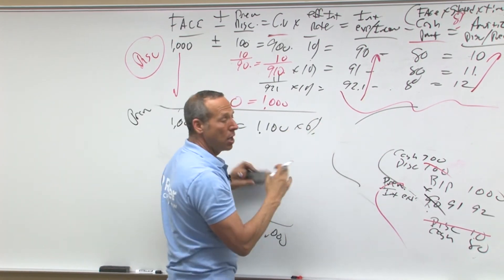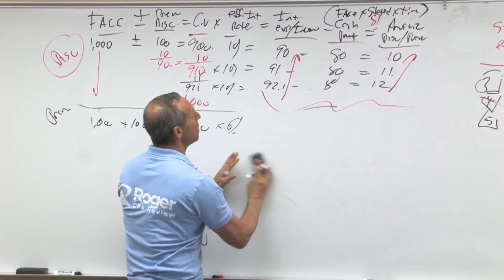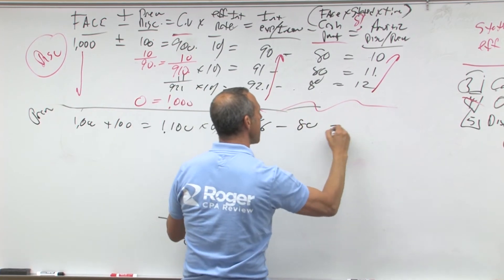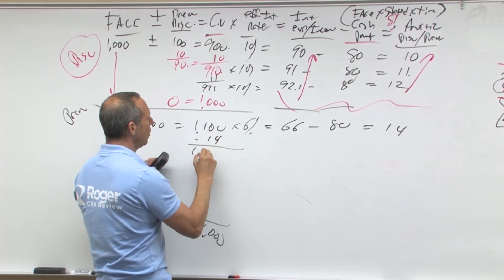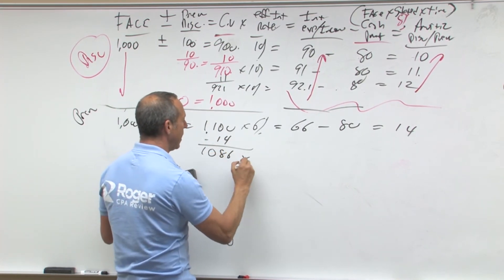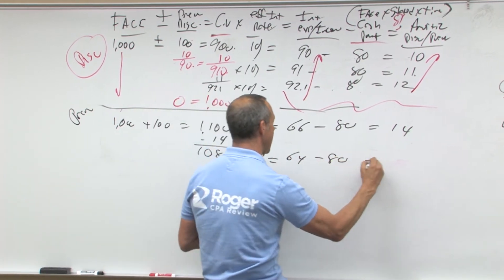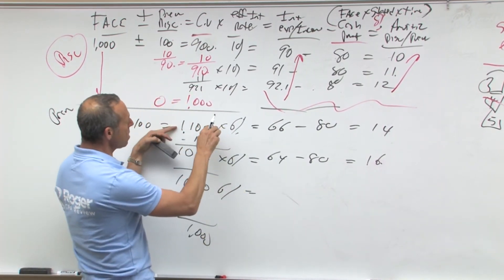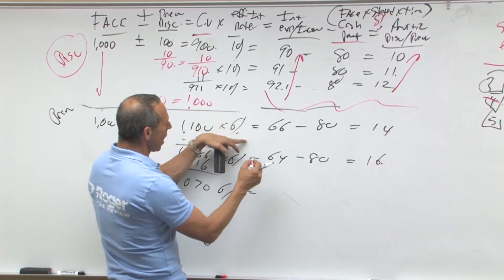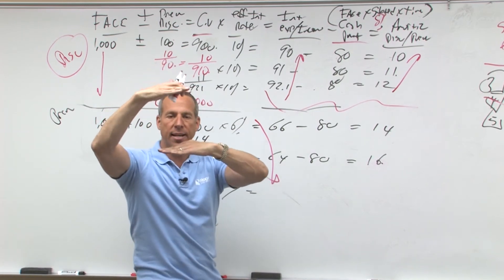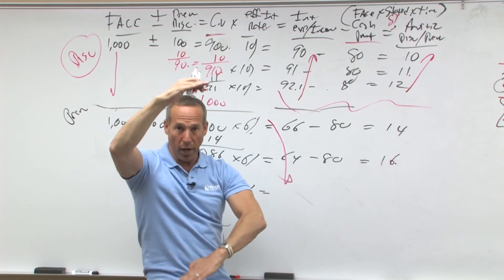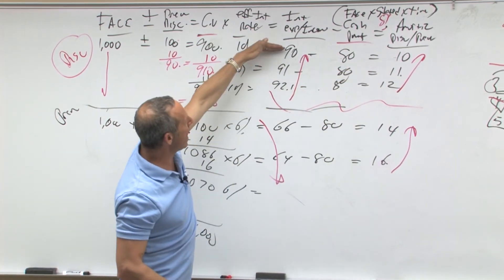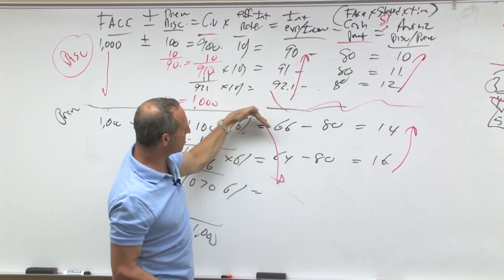Times 6%, because we're issuing at a premium — I'm still paying you 8% cash but I only want you to earn 6%. That equals about 66, minus 80 cash equals 14 amortization. Taking away 14 gives me a carrying value of 1086, at 6% equals about 64, minus 80 cash equals 16 amortization. Minus 16 equals 1070, at 6%, and so on. Notice every year in a premium, it starts big and gets smaller. As the carrying value goes down, times the interest rate, interest expense goes down: 66, 64, 60, 52... The difference every year still gets bigger. So in both cases, amortization gets bigger each year. In a discount, interest expense goes up; in a premium, interest expense goes down.